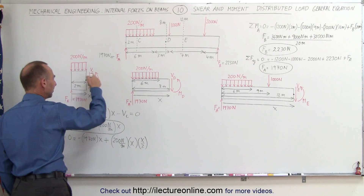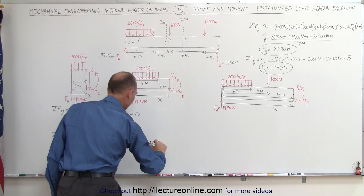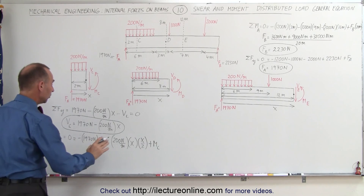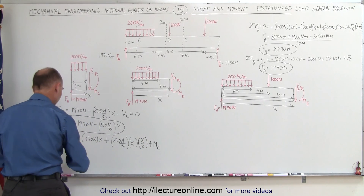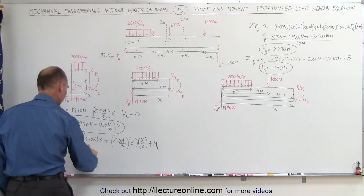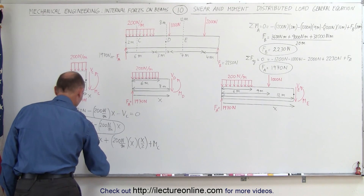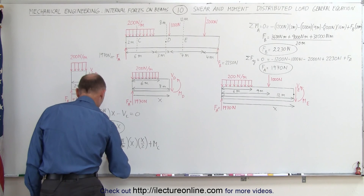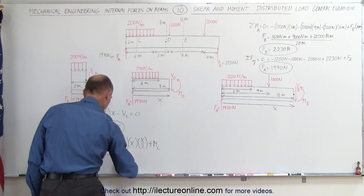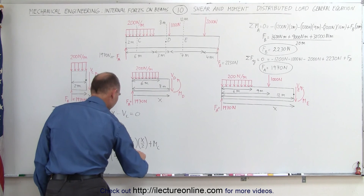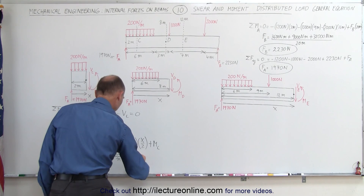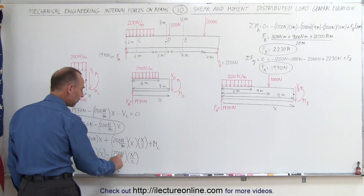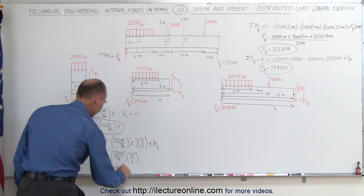We add the moment at C, which is positive because it acts clockwise, and all that adds up to 0. Moving everything else to the other side, the moment at C equals 1,970 N times x meters, minus 200 N per meter times x squared divided by 2. Since x is in meters, the units work out to N·m.